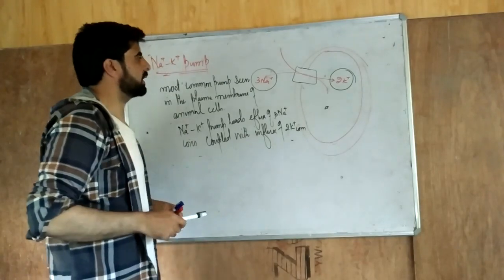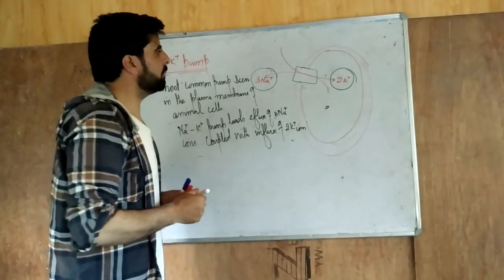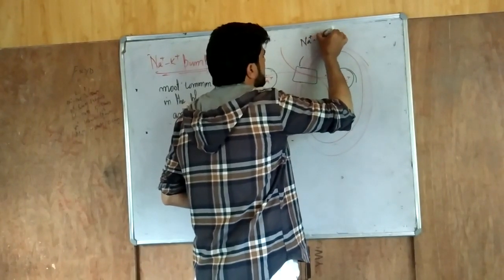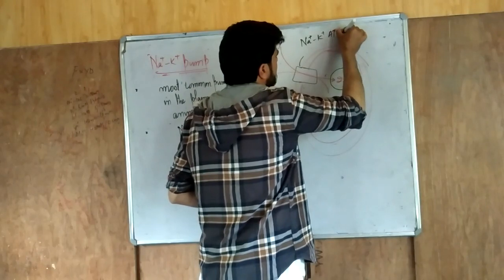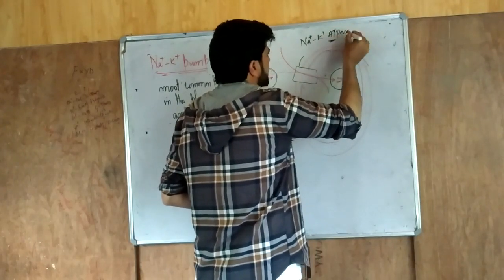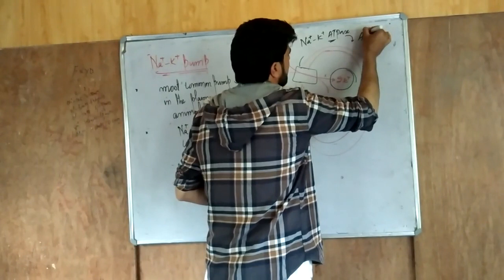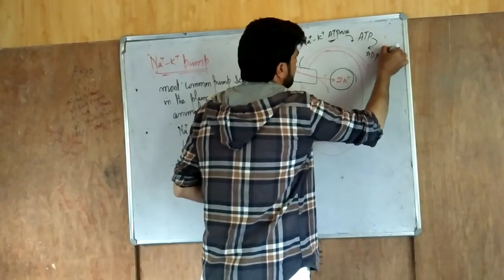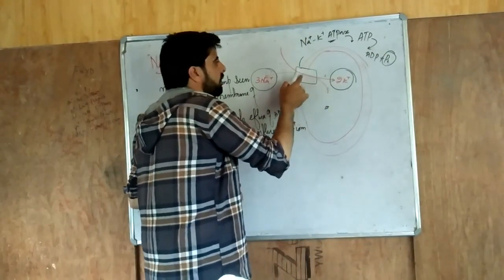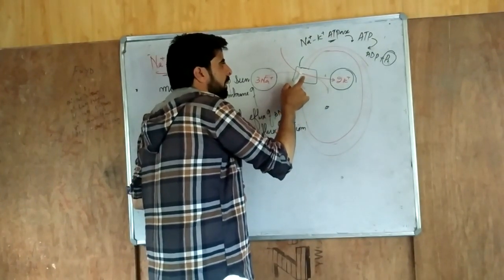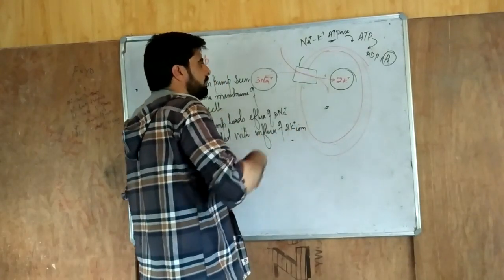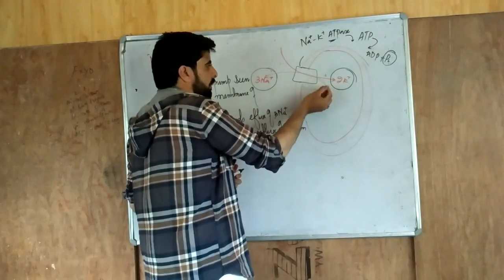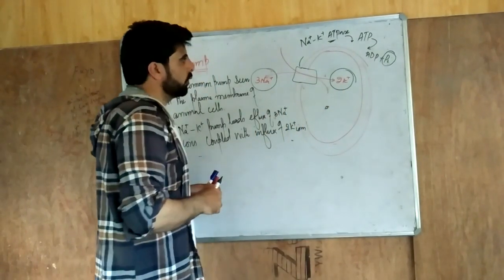One more important thing to keep in mind: this sodium-potassium pump is also known as sodium-potassium ATPase, because it has a site for the breaking down of ATP. ATP is broken down into ADP plus phosphate, and that phosphate leads to the phosphorylation of the sodium-potassium pump, activating it. When activated, it leads to the influx of 2 potassium ions coupled with the efflux of 3 sodium ions.